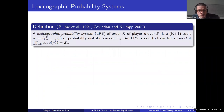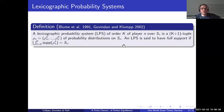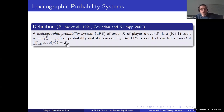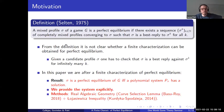The main tool we use to construct the polynomial system is lexicographic probability systems (LPS). A lexicographic probability system of order k of player n over the pure strategy set of player n is a tuple of probability distributions over that pure strategy set. It is said to have full support if each strategy of player n appears with positive probability in at least one of the elements of the LPS.